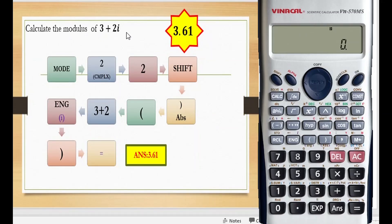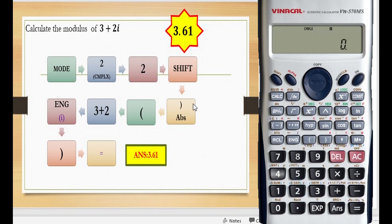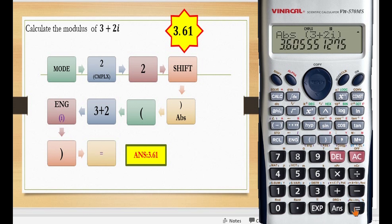Calculate the modulus of 3 plus 2i. Press mode, 2 for complex, then press the button 2. After that, press shift close bracket for ABS, then open bracket and key in 3 plus 2i — ENG for i — then close the bracket and press equal to. You get 3.60555, or approximately 3.61.